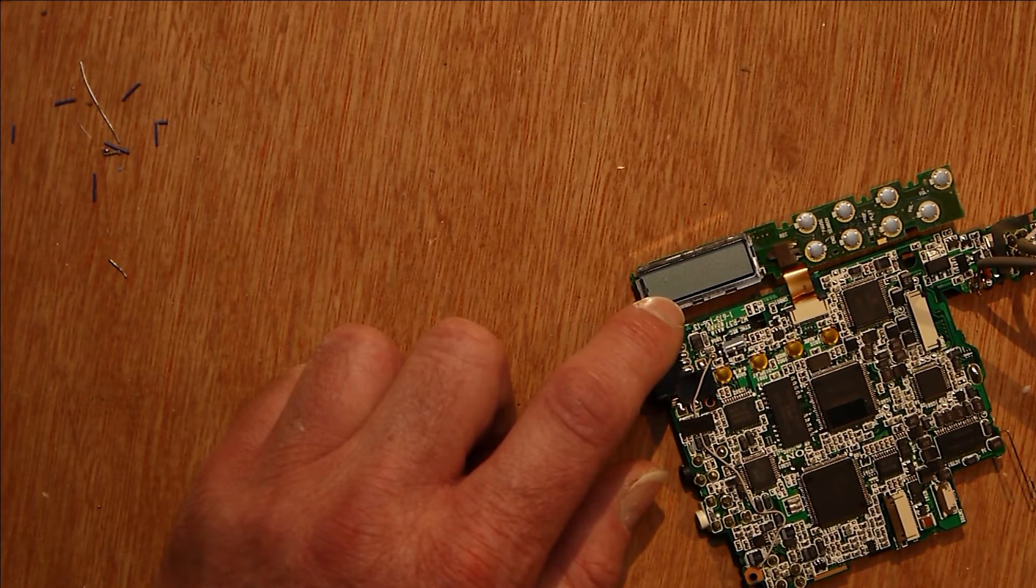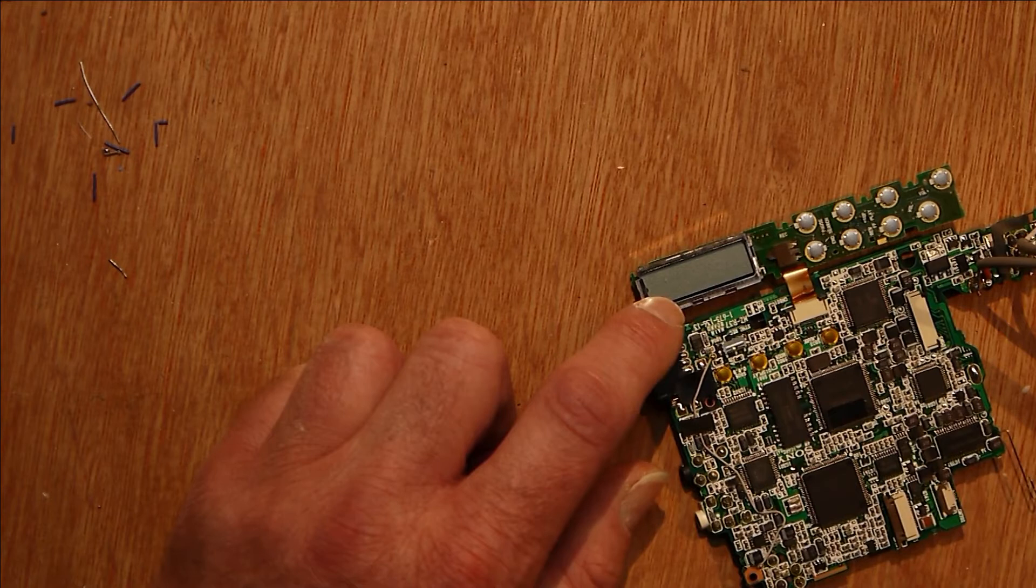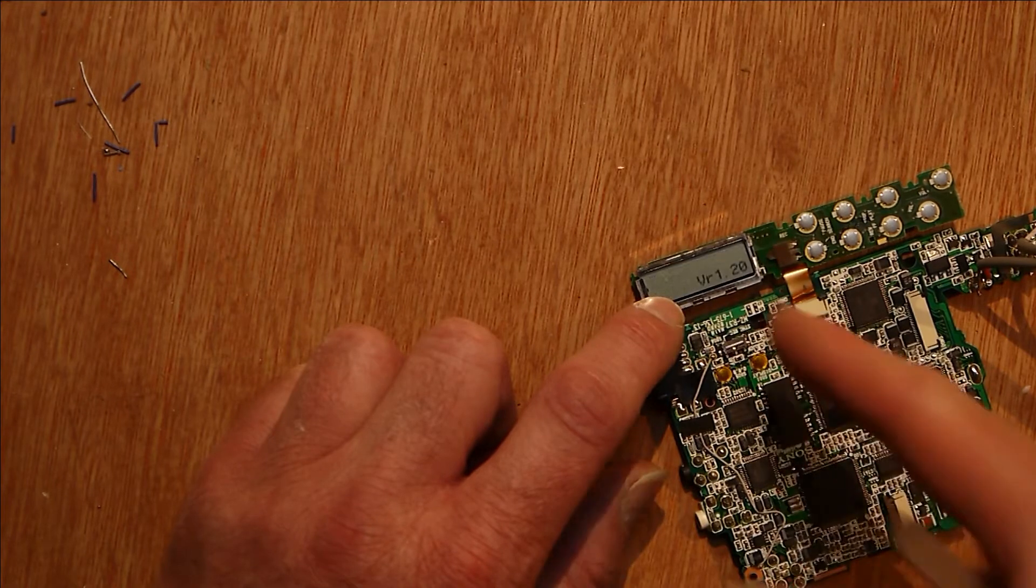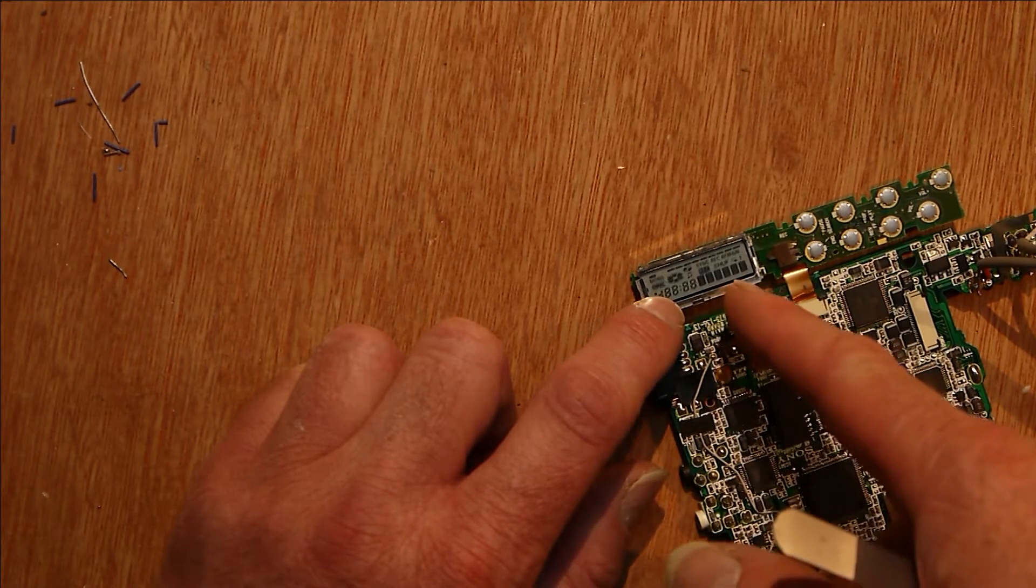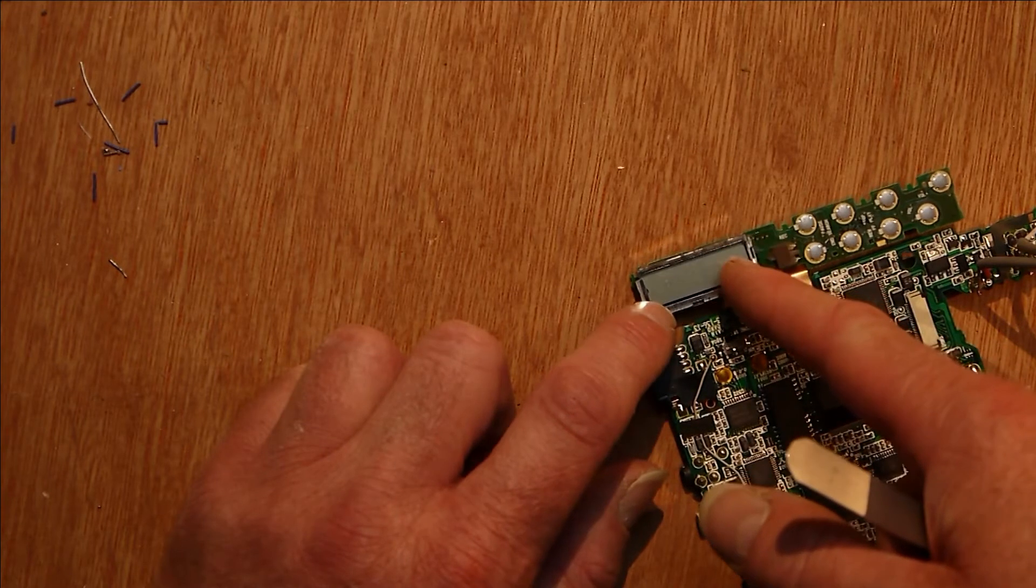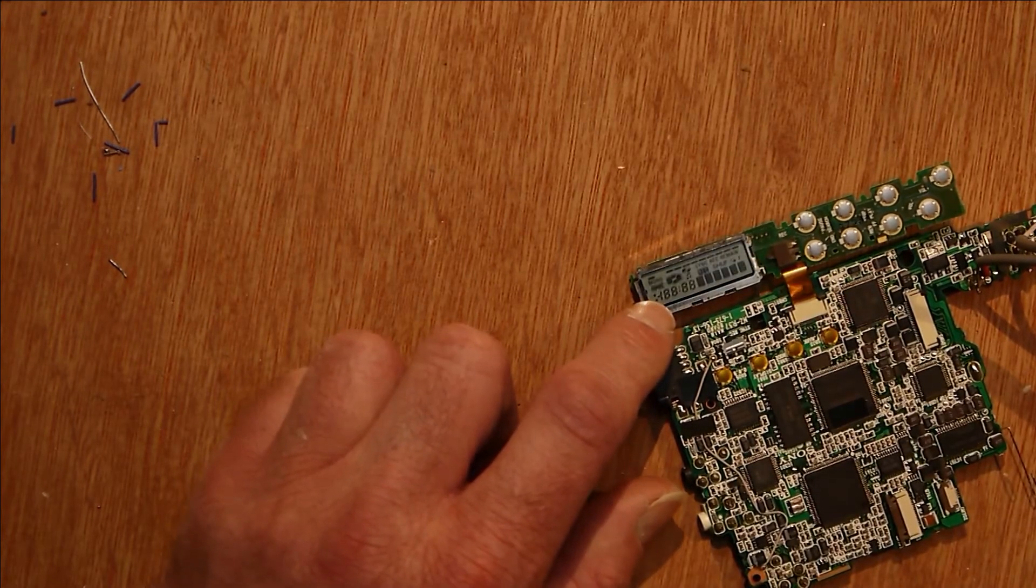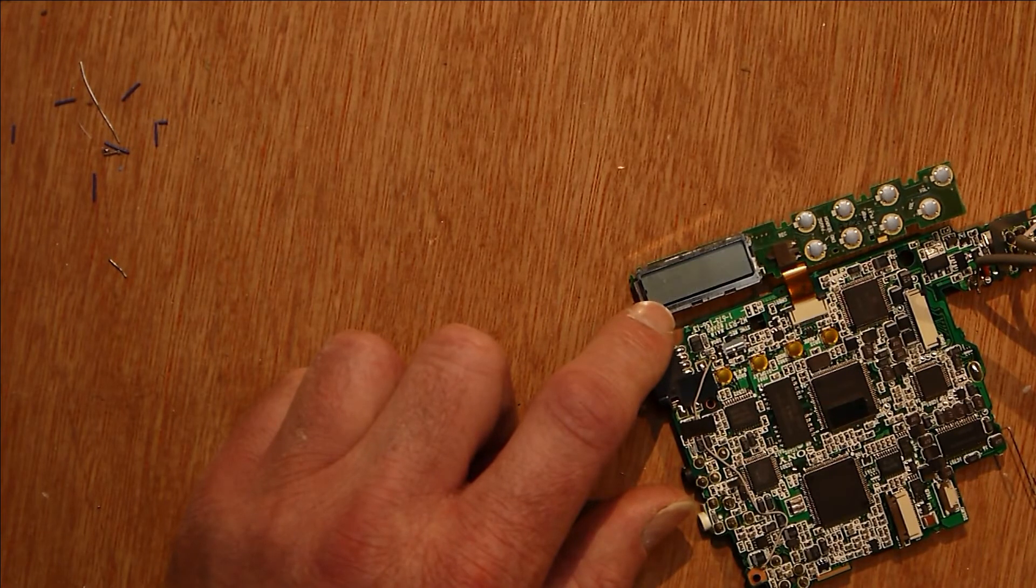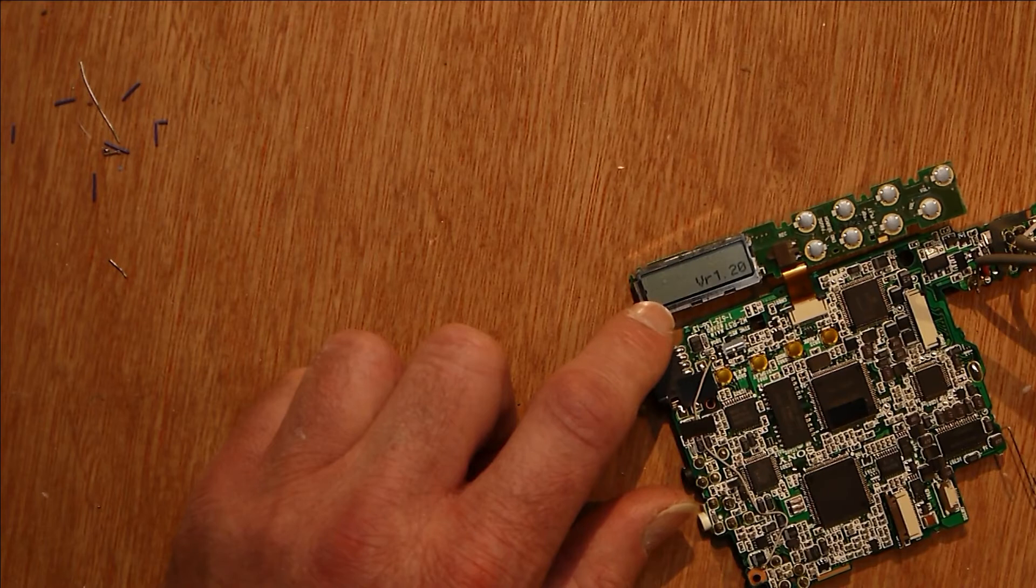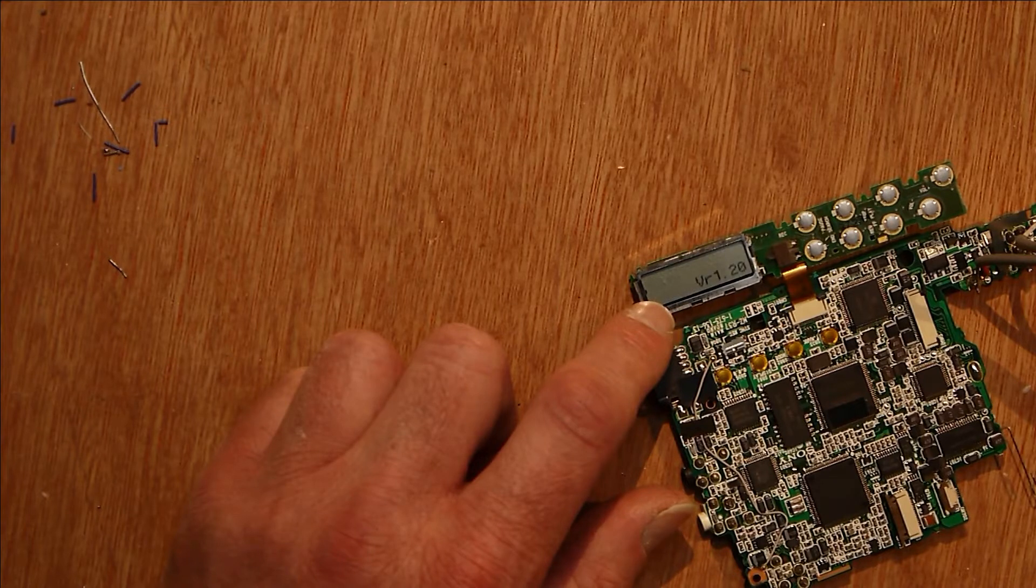It comes on and cycles through a display which shows the version number of the firmware, all segments on, and if you press a button, it's all off, all on. You see the microprocessor version display, then you can hold the pause button.